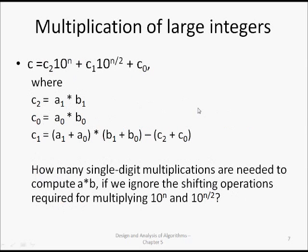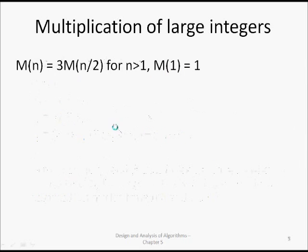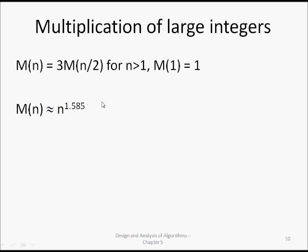Solving the recurrence M(n) = 3×M(n/2) gives a time complexity of O(n^1.585). If we had used four multiplications (the naive approach), it would have been O(n²). So we gain significantly — n^1.585 is less than n², and this is the divide and conquer method for large integer multiplication.